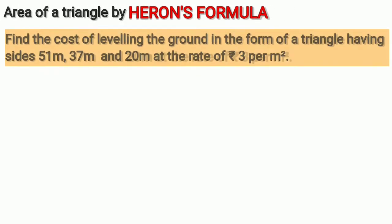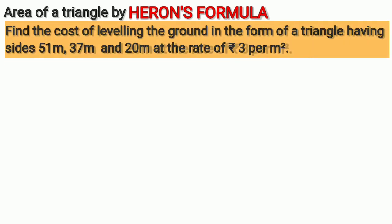Let's see what the question is. Find the cost of leveling the ground in the form of a triangle having sides 51 meter, 37 meter and 20 meter at the rate of rupees 3 per meter square.